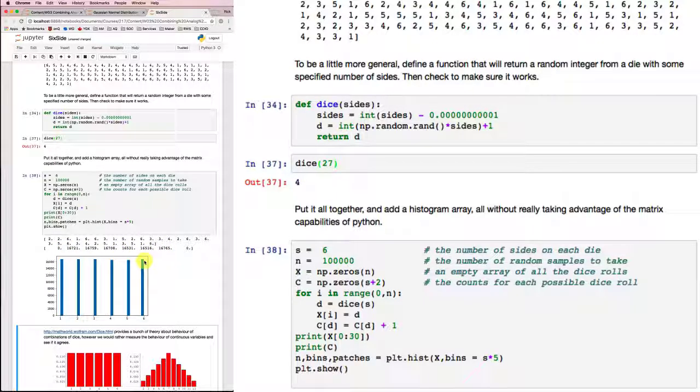And if I look at the histogram, the histogram shows around 1, 2, 3, 4, 5, 6, but nothing in between.